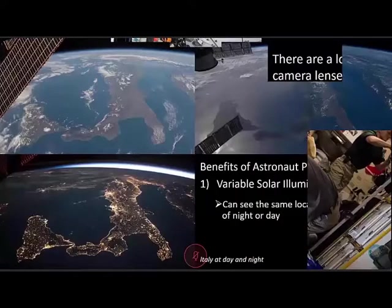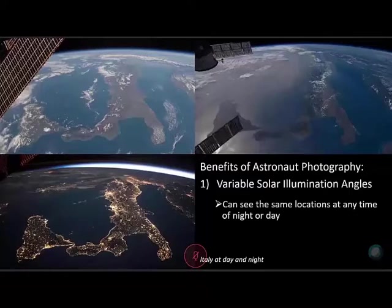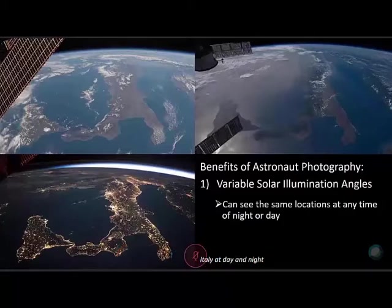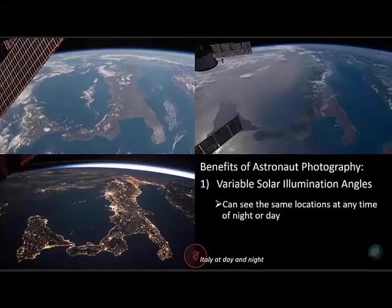One of the benefits of astronaut photography from the International Space Station is being able to look at Earth from different types of days — variable solar illumination means night, day, dusk, and dawn. Using Italy as an example, we have a daytime photo, a dawn or dusk photo, and a nighttime photo where you can see the Italian peninsula lit up as well. This can be beneficial especially when looking at cities at day or night, showing changes to urban growth or urban development over time.